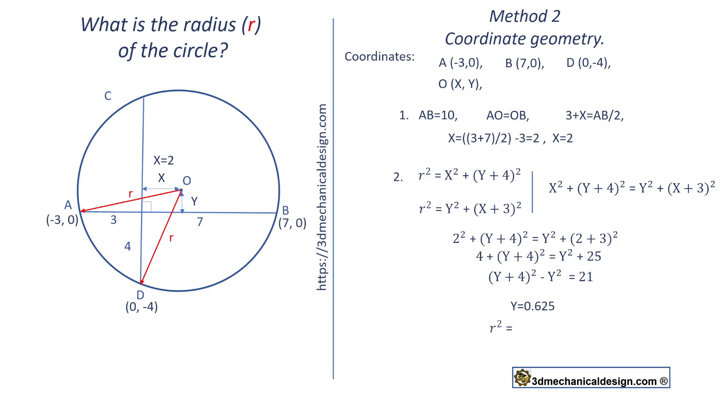Radius squared equals 2 squared plus 4.625 squared. And we get y equals 0.625.